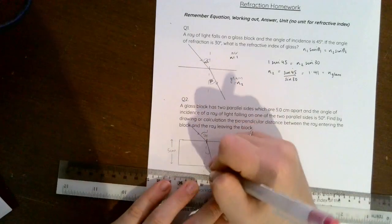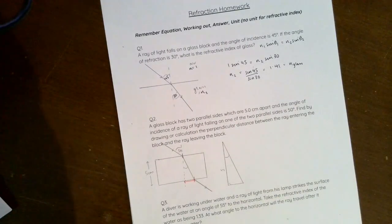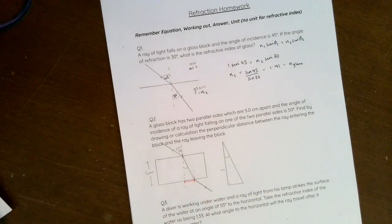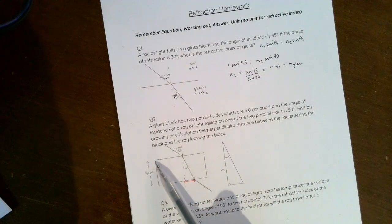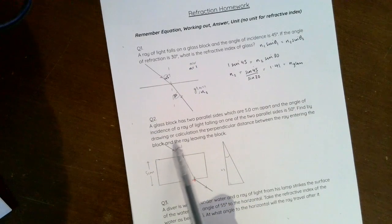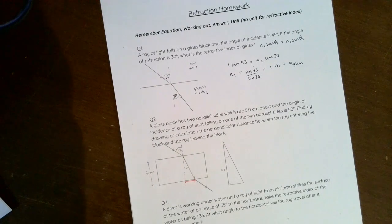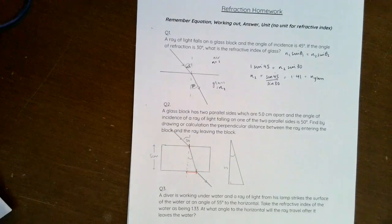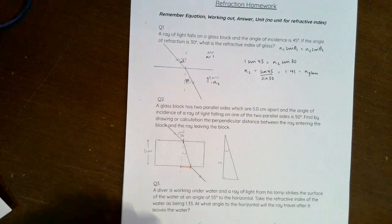I'm not going to do it by drawing because that's fairly straightforward, you literally physically draw it to scale so that this line is actually five centimeters and this angle is actually 50, and then if you draw it you should just be able to measure it with a ruler. But I'm going to show you the calculation method just to help you out here.